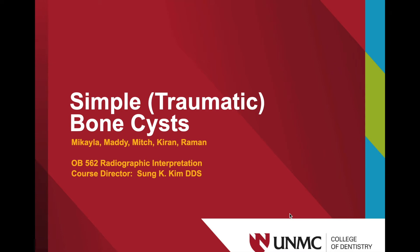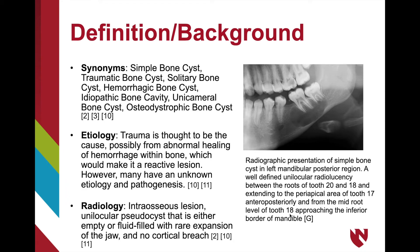Today we're going to talk about simple or traumatic bone cysts. Simple bone cysts are also commonly known as traumatic bone cysts. However, they have many other names including solitary bone cyst, hemorrhagic bone cyst, idiopathic bone cavity, unicameral bone cyst, and osteodystrophic bone cysts, to name a few.